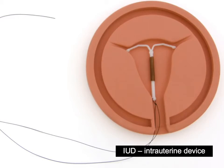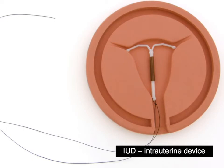Here we've got the IUD, or intrauterine device. The IUD is a chemical method of contraception — it's a small, plastic-coated copper coil which may be left in the uterus for months or even years. It is quite reliable; it prevents implantation by irritating the lining of the uterus, which can cause symptoms such as bleeding. When we talk about implantation, we mean the fertilised egg cell or zygote embedding into the uterus for development, and the IUD ultimately prevents that from happening.